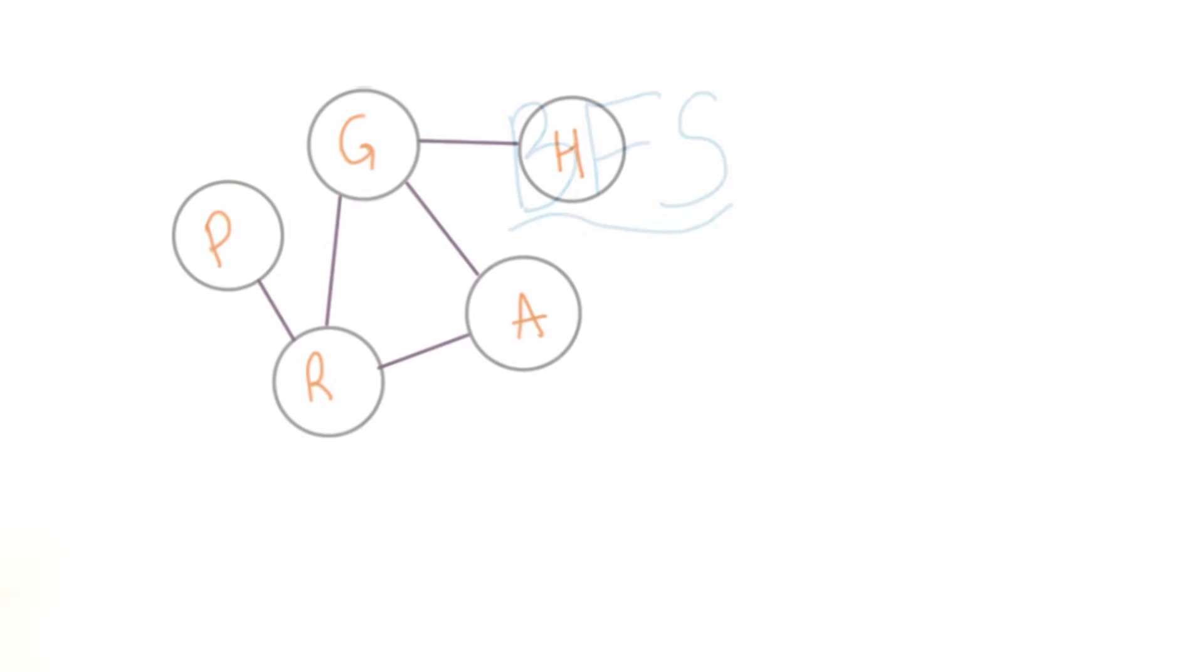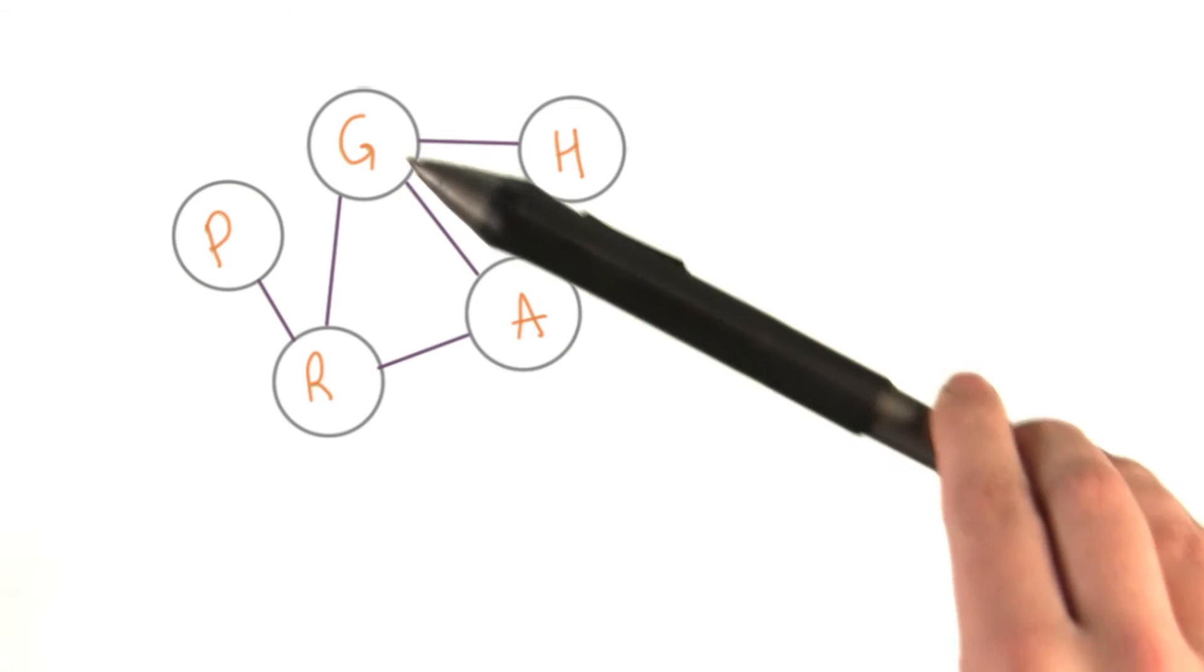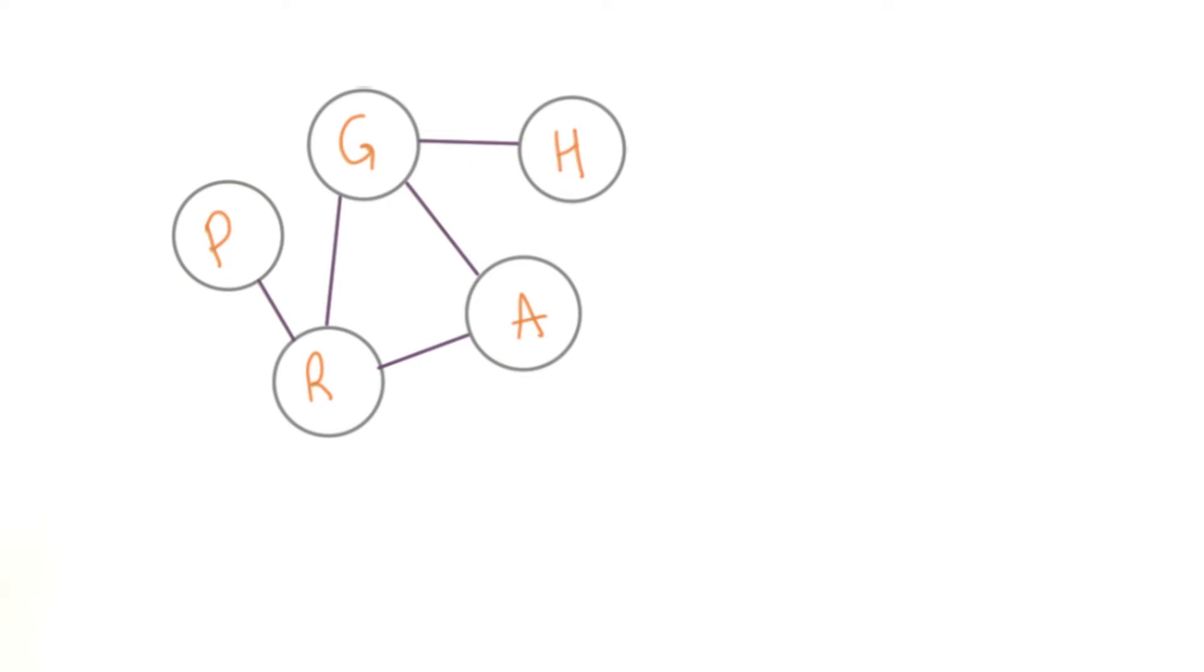You're still visiting every edge and marking off every node. However, here you search every edge of one node before continuing on through the graph.